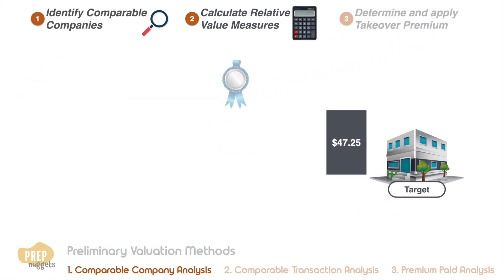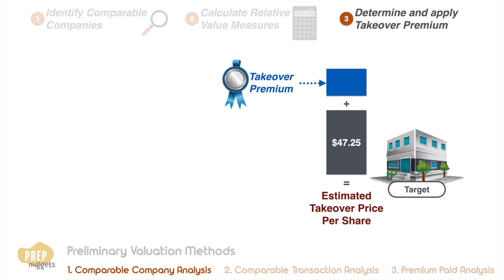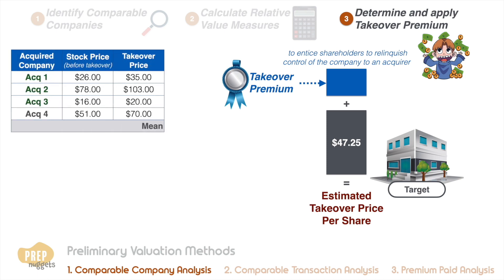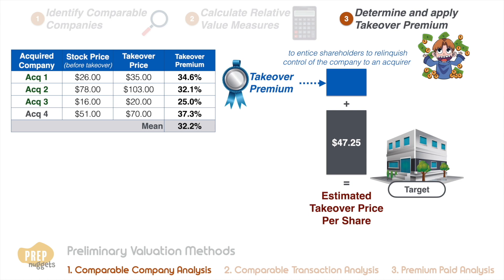The last step is to estimate and apply a takeover premium to arrive at the final estimated takeover price of the target company. The takeover premium is used to entice shareholders to relinquish control of the company to an acquirer, and it is estimated based on recent takeovers of similar companies. For example, if there are four recent takeovers of similar companies, we can calculate the premium for each and take the average — in this case, the mean premium would be 32.2%, implying a takeover premium of $15.21 based on the target's market share price.